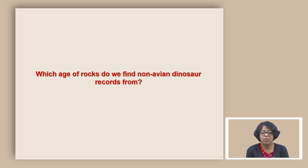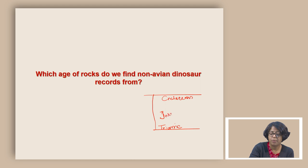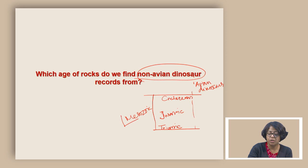Which age of rocks do we find non-avian dinosaur records from? Non-avian dinosaur record means it is those dinosaurs which are not related or which are not birds. We know that the dinosaurs actually appeared in Triassic and they continued all the way to Cretaceous. In between there is Jurassic and this is called Mesozoic. The avian dinosaurs actually continued because we still find the birds which are technically an avian dinosaur.